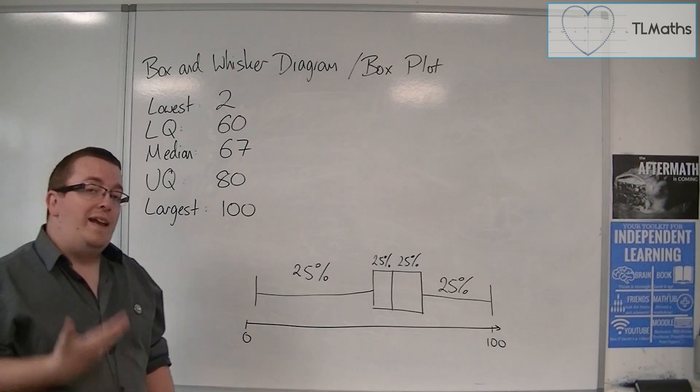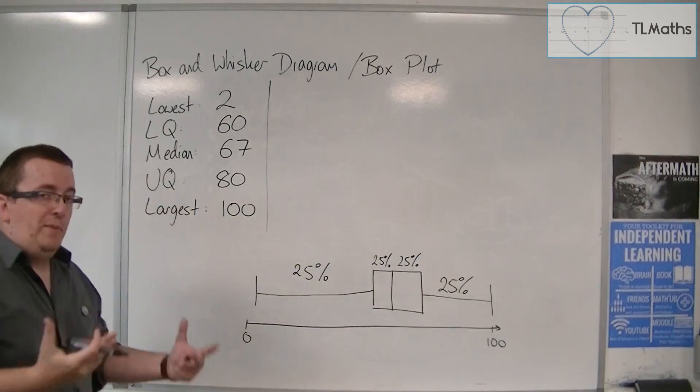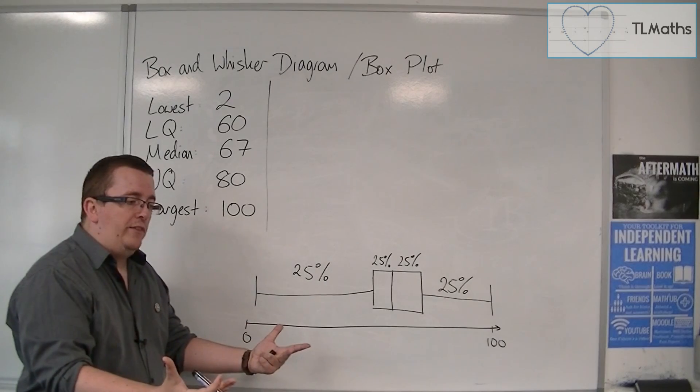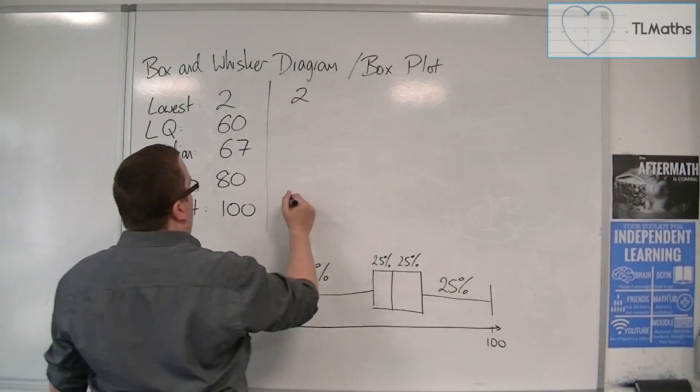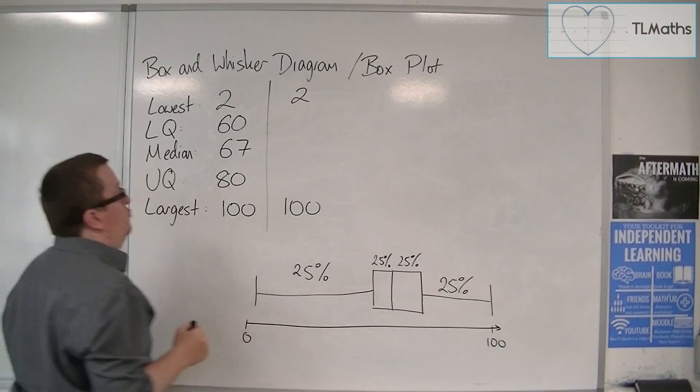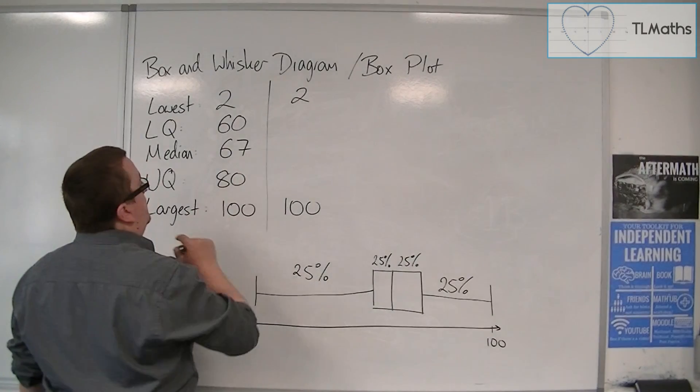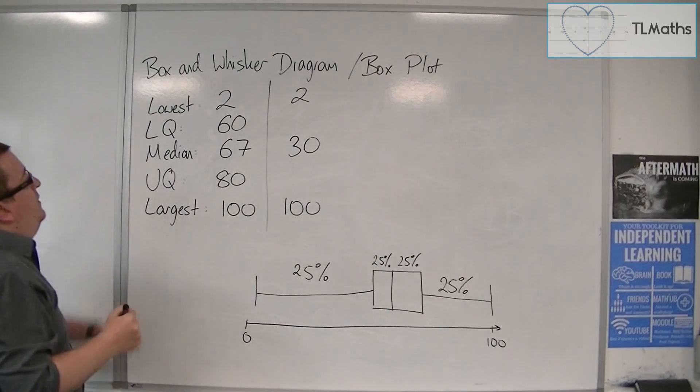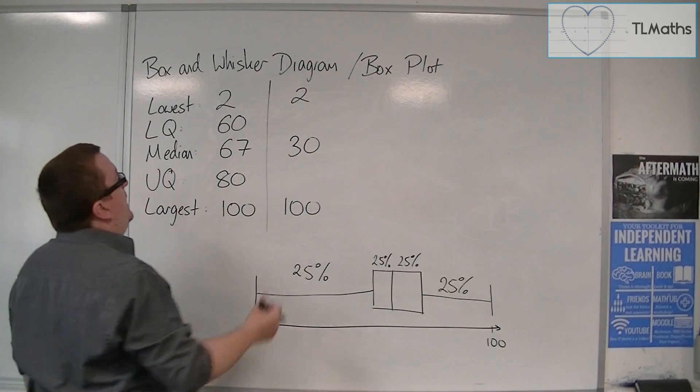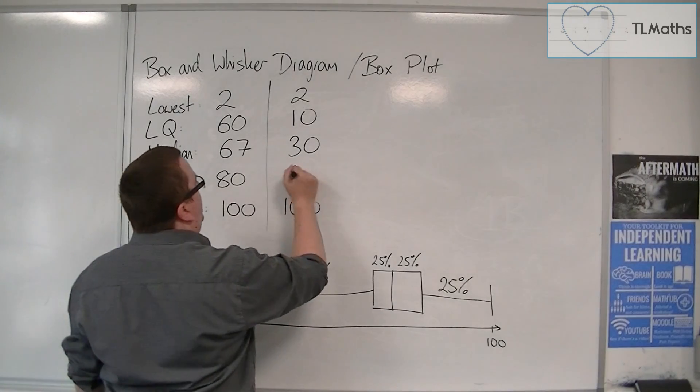So let's say I have a second set of data and we have similar numbers in the sense that the lowest is 2 again, the largest is also 100. But now what we find is that the median is instead 30. The lower quartile is 10, and the upper quartile is 60.